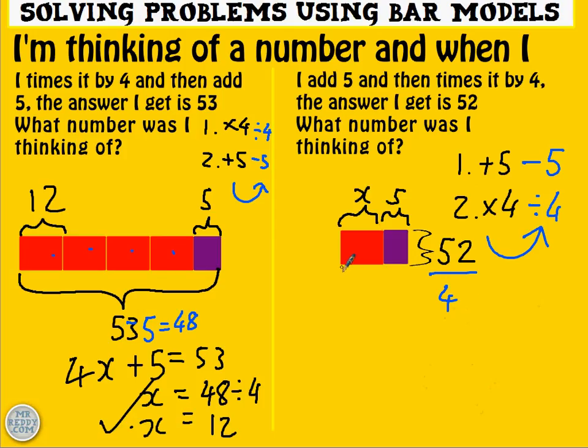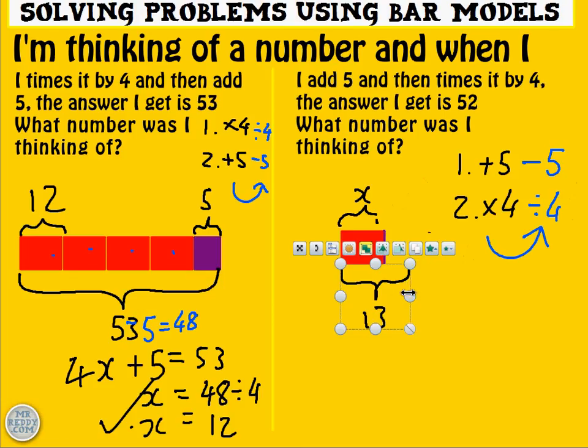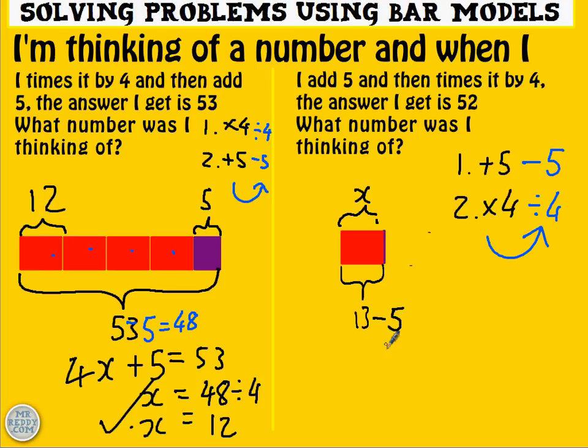So in other words, this bit is worth 13. 52 divided by 4 is 13. And I've done the dividing by 4. I now need to take away 5. Take away 5, and that leaves you with x. So it's not 13 now. It's 13 take away 5. In other words, it's 8.